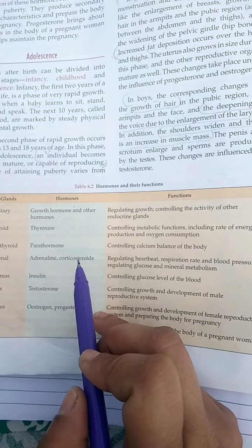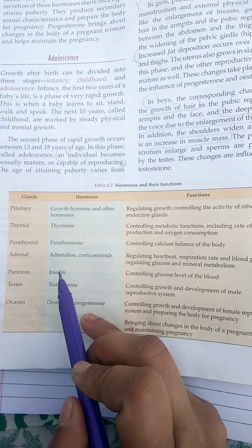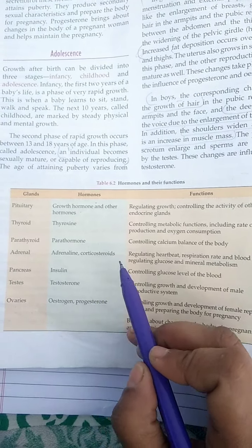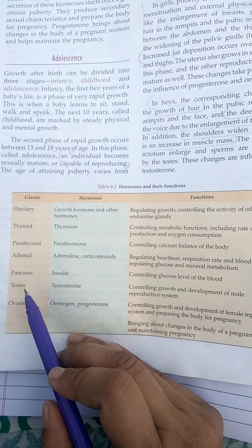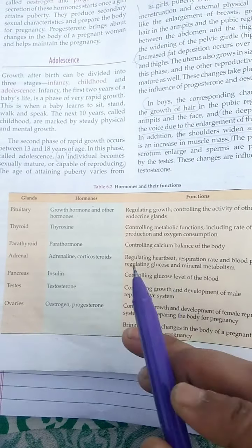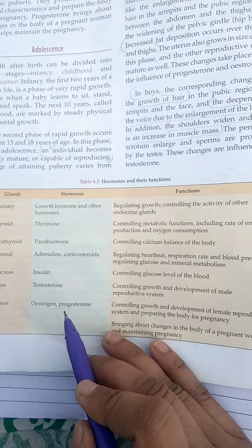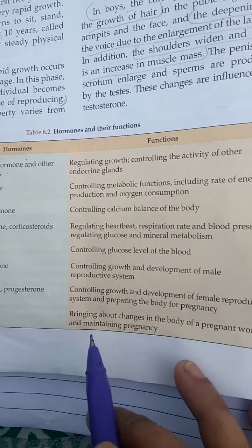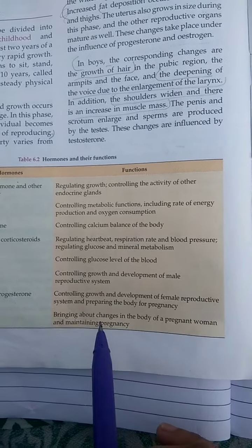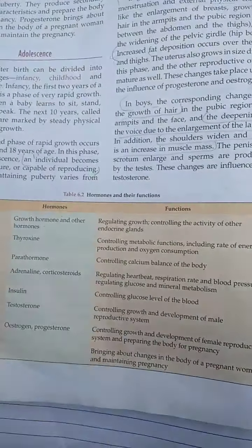Corticosteroids regulate glucose and mineral metabolism. The pancreas secretes insulin, which controls the glucose level by converting glucose into glycogen stored in the liver. In males, the testes secrete testosterone, controlling the growth and development of the male reproductive system. In females, the ovaries secrete estrogen and progesterone, bringing about changes in the body of a pregnant woman, maintaining pregnancy, and controlling the development of the female reproductive system.